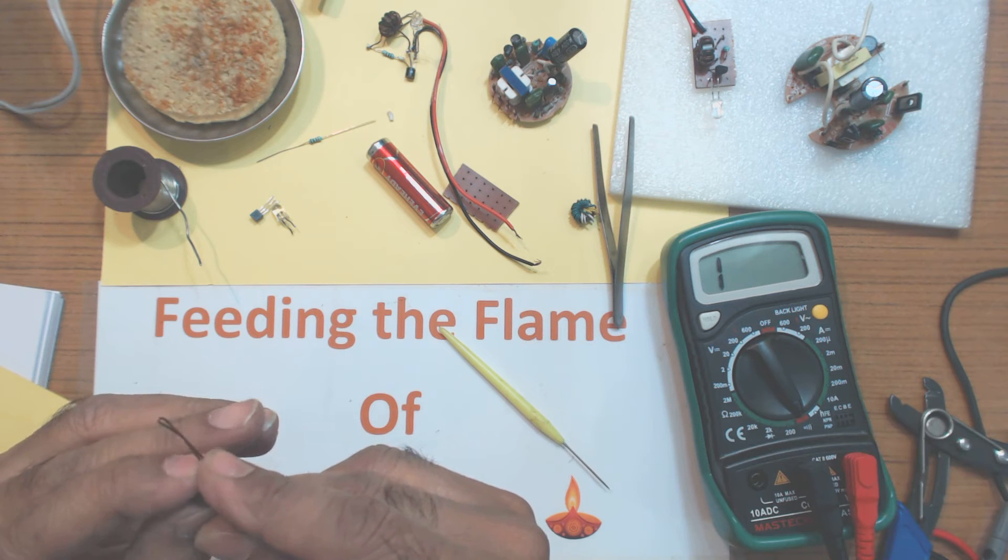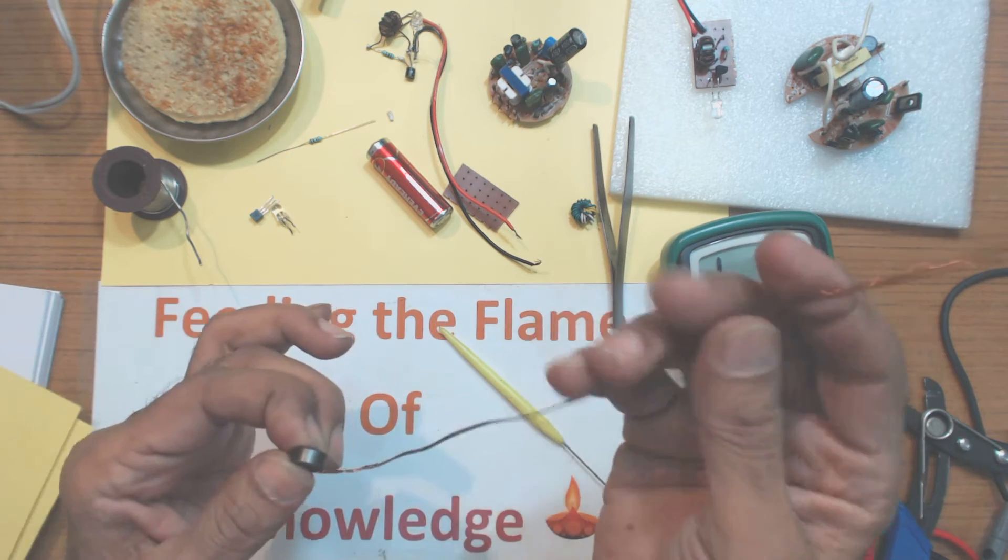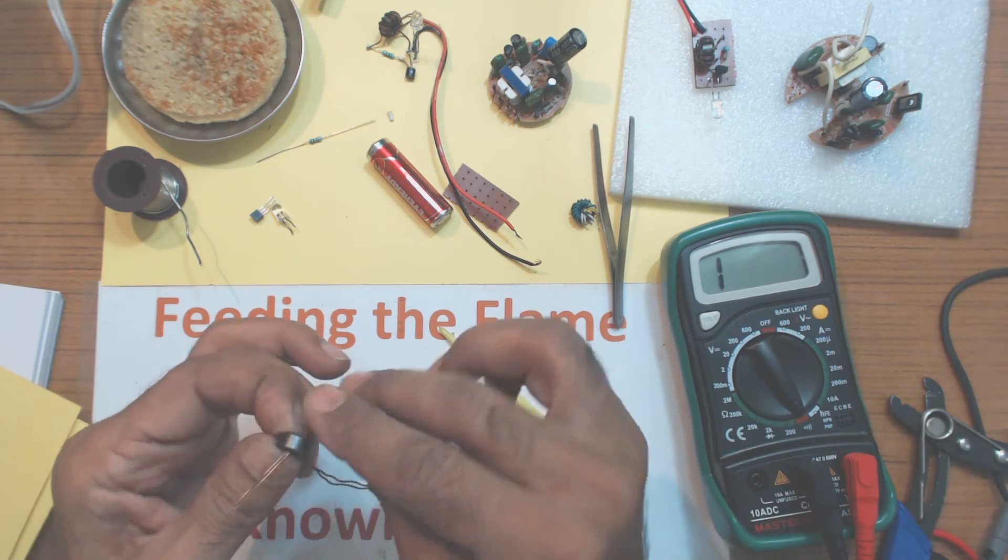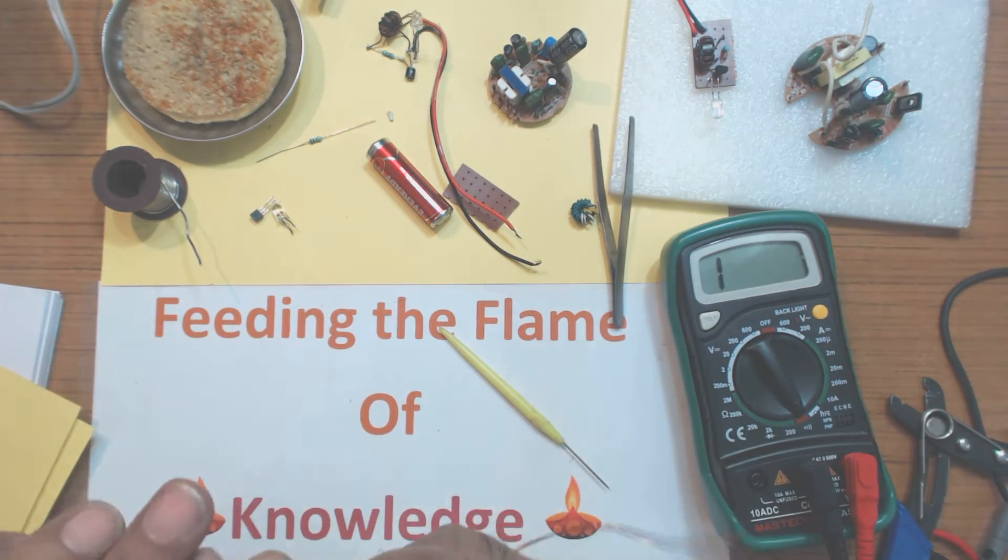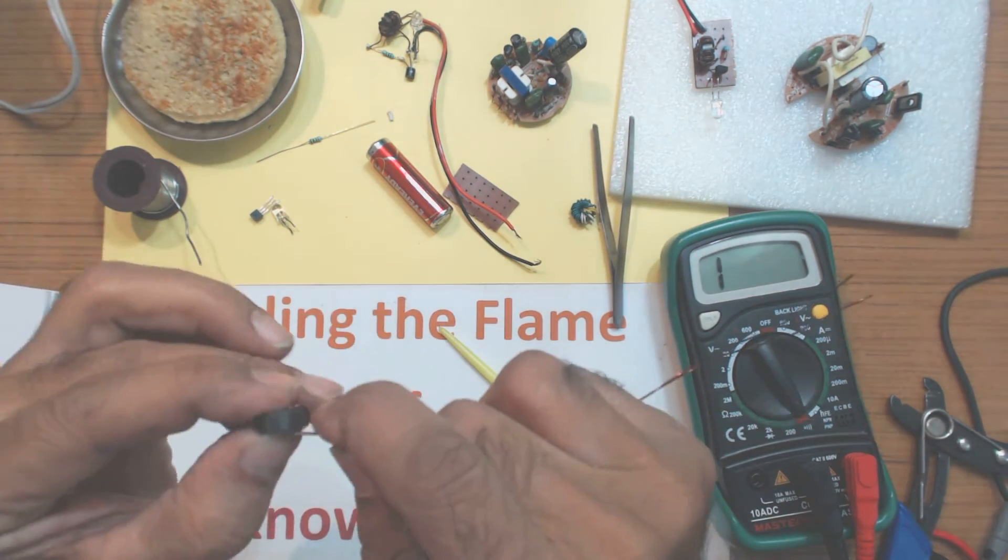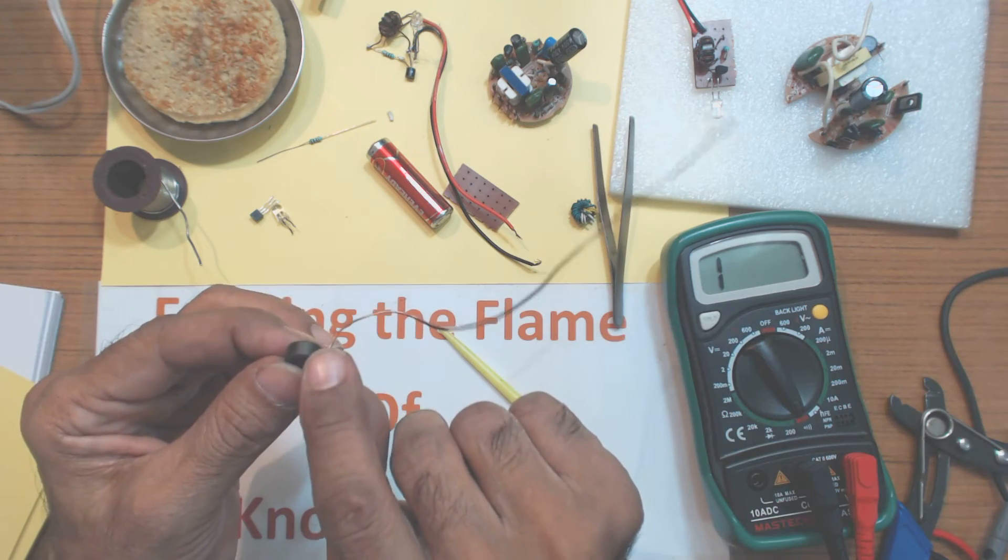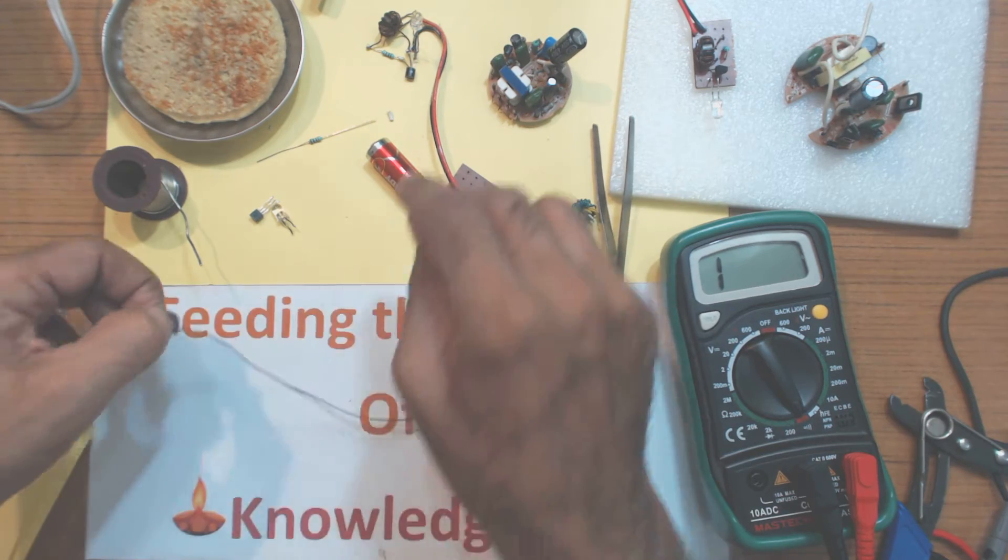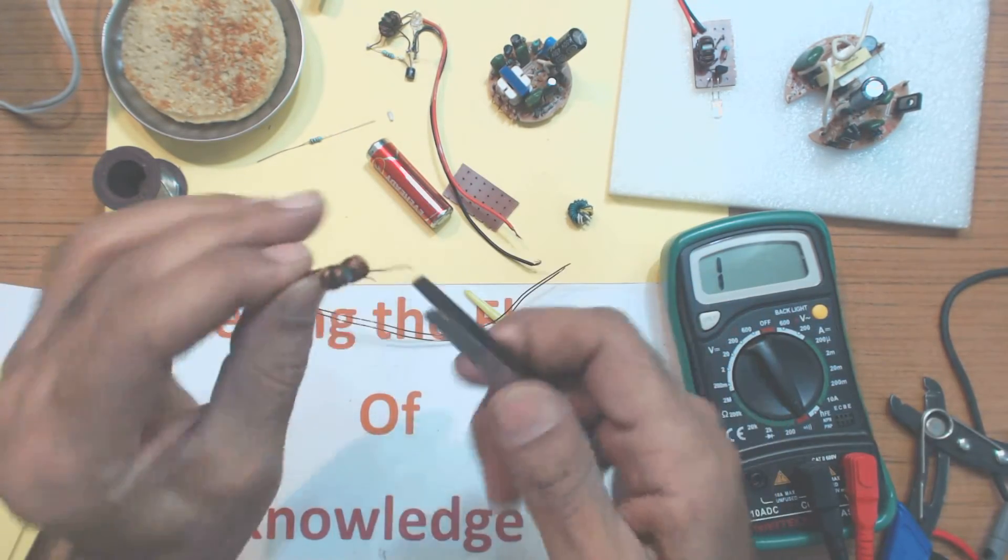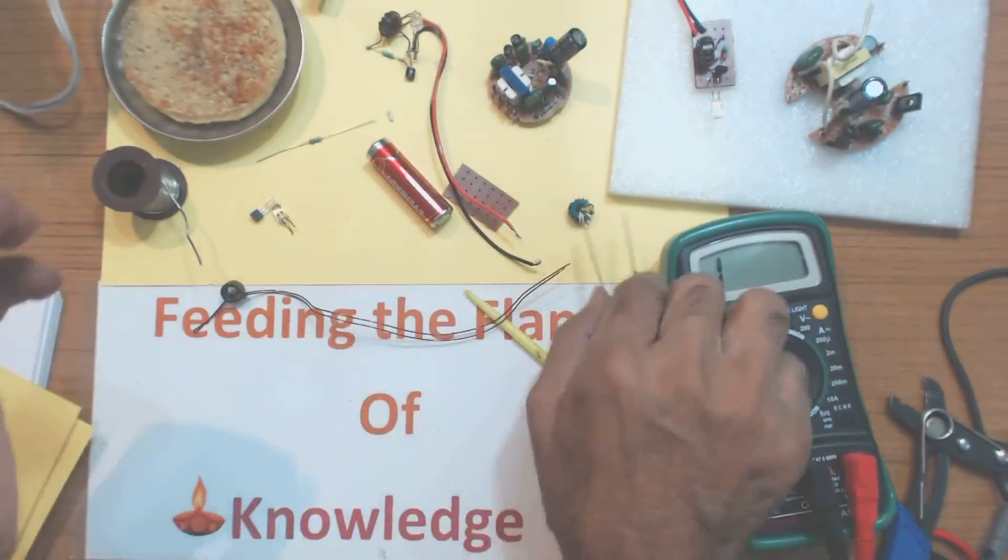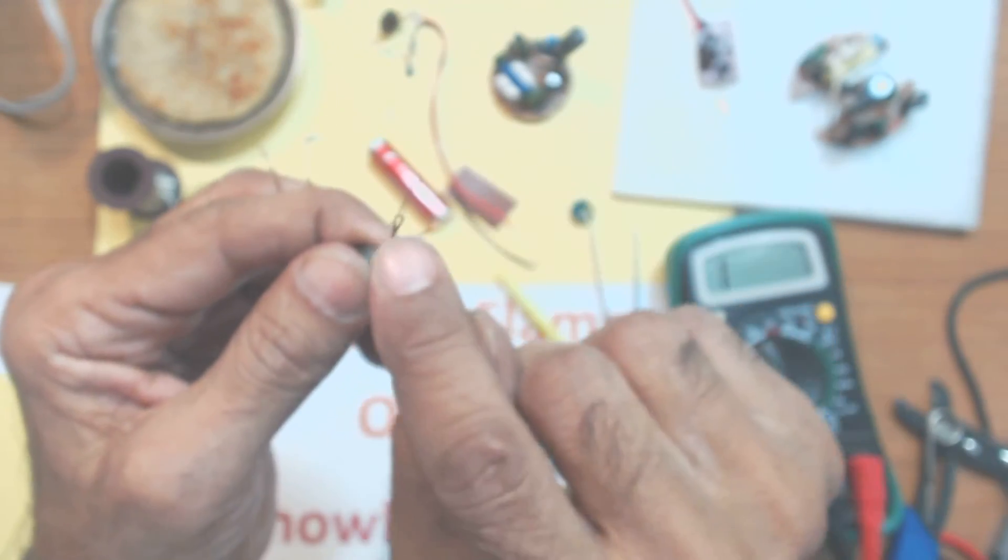Then you can wind it. Leave about 2 centimeter at the end for connecting to the circuit. And you can skillfully with patience, you need patience. You can wind. Wind it tightly around and the complete winding will have about 10 to 11 turns. So, here it is one which I have already made. You can look at it.